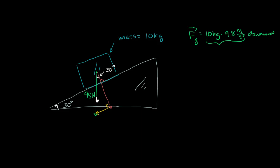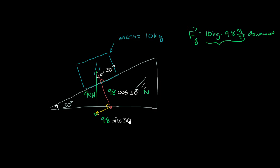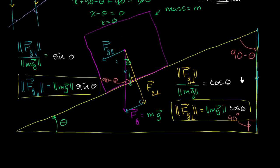We can use basic trigonometry to find these magnitudes. The orange vector's magnitude over the hypotenuse equals cosine of 30, so the perpendicular component is 98 times cosine of 30 degrees newtons. The component parallel to the surface is 98 times sine of 30 degrees — opposite over hypotenuse equals sine of an angle. This all comes straight out of basic trigonometry.